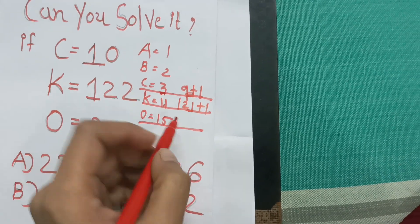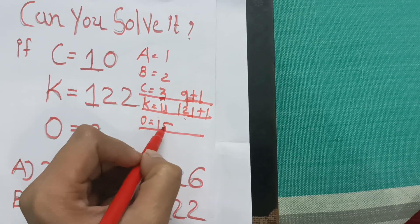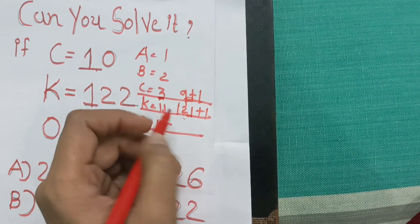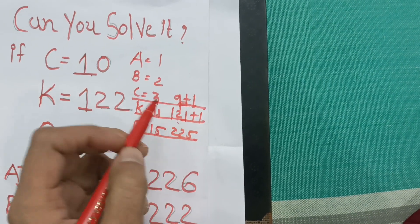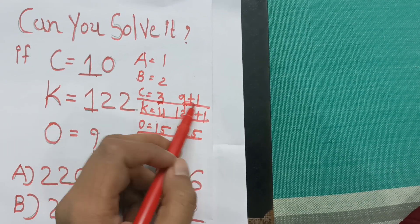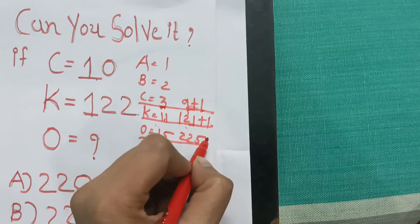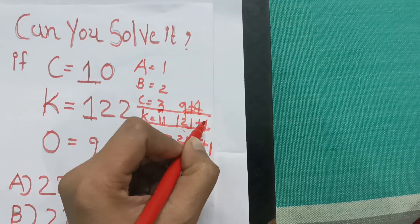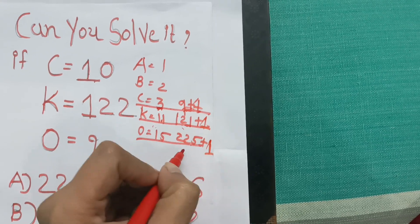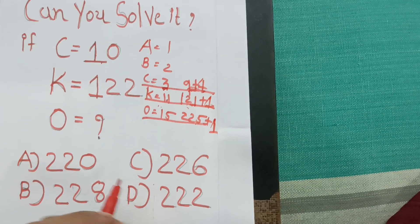Then O's alphabetical order is 15. Its square is 225, and we have to add 1, because here we added 1, here we added 1. So the answer is 226.